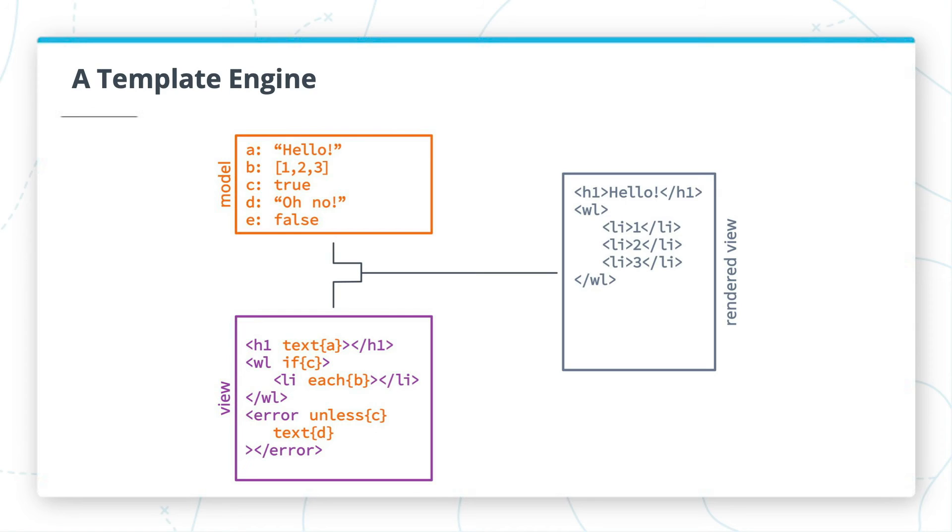As you've seen already, we can also add special attributes to the template that tell Thymeleaf how to process their respective elements. As you saw with the th:text attribute, we can refer to variable names in Thymeleaf attributes.